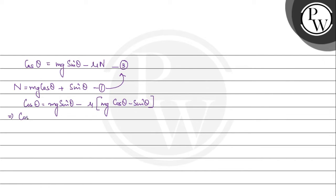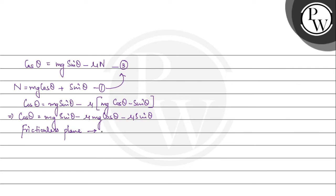We can write it as cos theta equals mg sin theta minus mu times (mg cos theta minus sin theta). Now consider the case of a frictionless plane — if we talk about a frictionless plane, then mu gets reduced to 0. Putting mu equal to 0 back into the equation, we have cos theta equal to mg sin theta, and the rest of the elements reduce to 0.